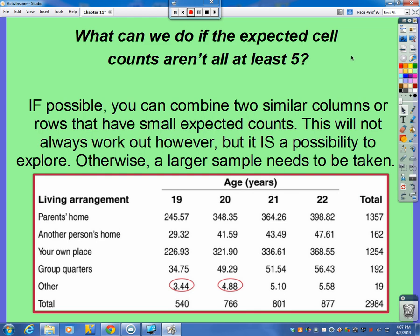Number one: what if the expected counts aren't all five? Is there anything you could do? Yes, there is something you could try to do, and I'm not saying this will always work, but it could be something to explore.